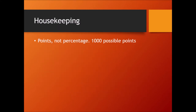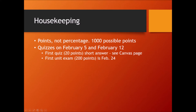Your grade is based on points, not on percentage. Over the course of time, you'll see those points build up on Canvas in the grade book. Don't be fooled because sometimes the percentage is off — there are a thousand possible points and your grade is taken from that. In actuality, there are even more than a thousand points because of all the extra credit, so that can throw off the percentages you see on Canvas. Your next assignments due are on February 5th and February 12th — two quizzes. These quizzes aren't worth very much, just 20 points out of a thousand total. They're really meant to mark where you are and make sure you feel well prepared for that first unit exam, which at 200 points is worth quite a bit more.